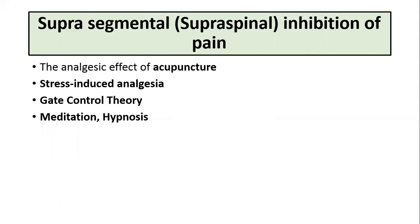Regarding the gate control theory, the touch fibers which are activated travel via the dorsal column medial lemniscal pathway. While ascending to the thalamus, they give off collaterals to the reticular formation, which activates the periaqueductal gray area and the descending fibers of the endogenous analgesic system.